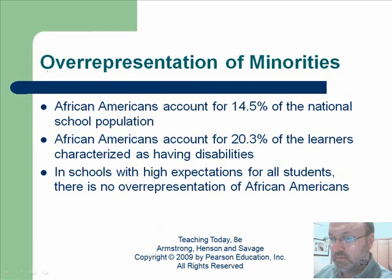Over-representation of minorities in special education means there are more students from certain groups in special ed than their proportion of the general school population would suggest. For example, African Americans account for 14.5% of the school population but 20% of special ed students. If it were a normal representation, a school with 14% African Americans should have about 14% of its special ed students be African American — any more than that is called over-representation.